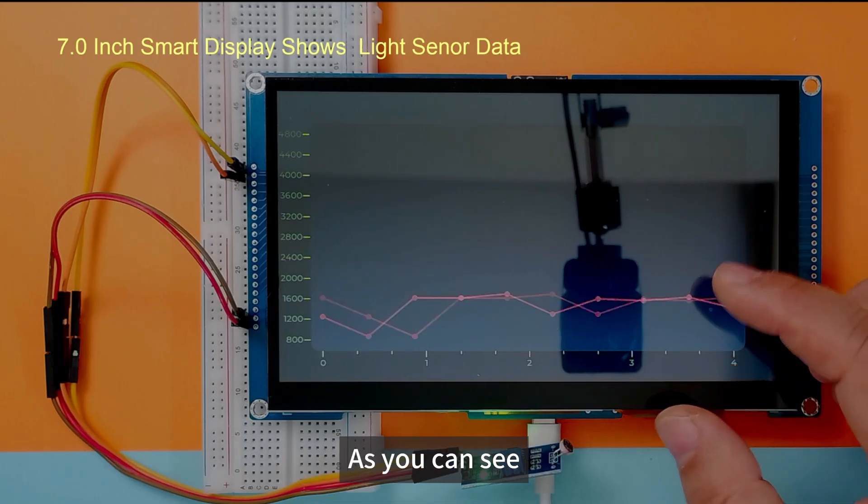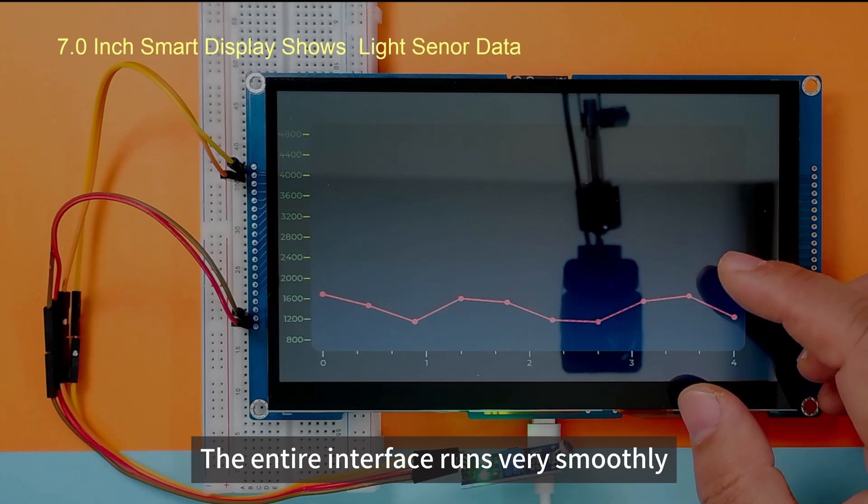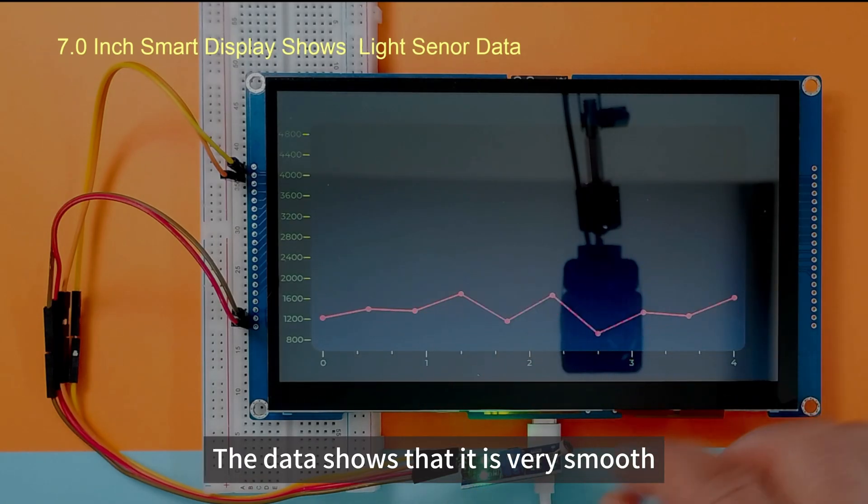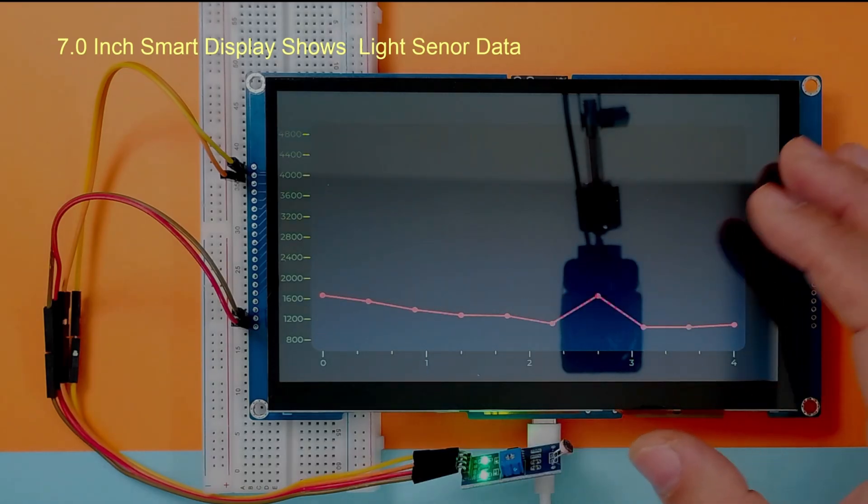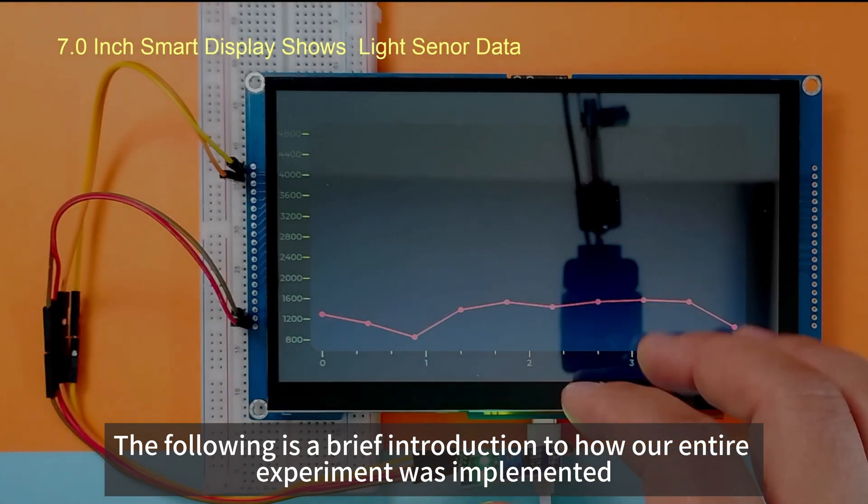As you can see, we run an LVGL interface. The entire interface runs very smoothly. The data shows that it is very smooth. The following is a brief introduction to how our entire experiment was implemented.